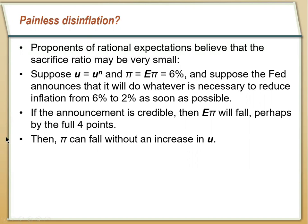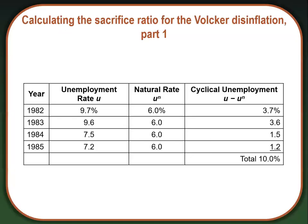If you recall, we talked about how inflation in the US in the 1970s was really high. Jimmy Carter appointed Paul Volcker to the Federal Reserve, and Paul Volcker came in and said he was going to do whatever it took to get inflation under control — cutting the growth rate of the money supply. He even went on the cover of Time Magazine to say he would do whatever it took. We can look at the data to see if Volcker actually got people to change their expectations in response.